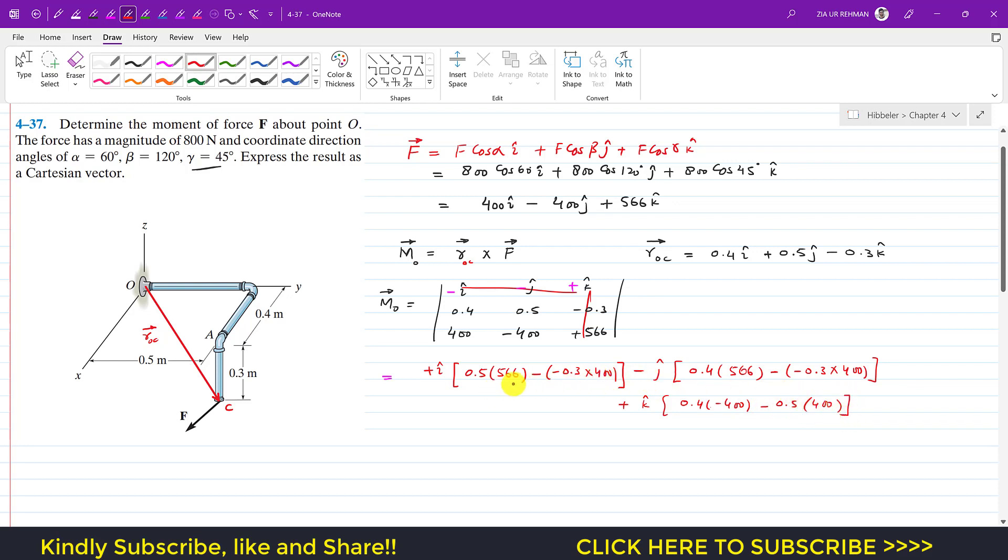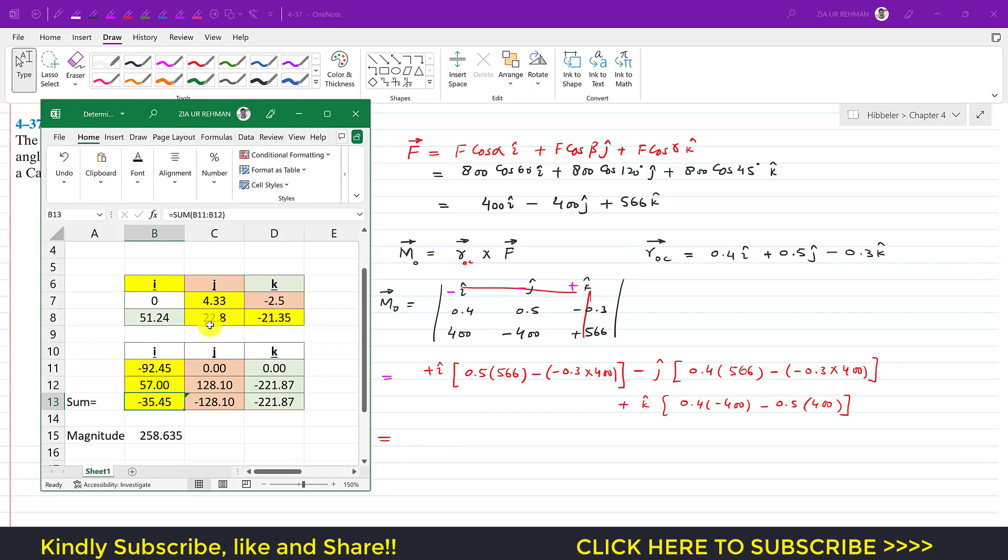So now you can find all these using calculator. I will use my Excel sheet to find all these determinants of sub-matrices. So I have developed an Excel sheet. I will put all those values of matrices. So this is 0.4, 0.5, and minus 0.3, and then 400, minus 400, and this is 566.